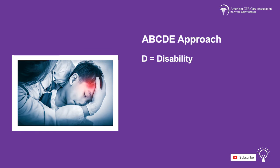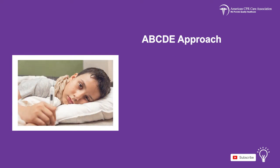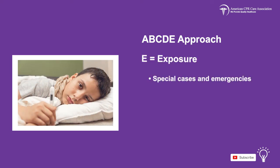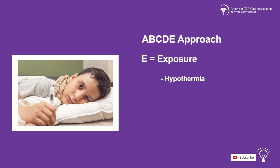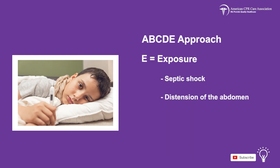D is for disability, which is usually noticeable during or right after the general assessment. When a child presents no response or is unconscious, immediate attention must be given. E is for exposure. For special cases and emergencies, immediately check for signs of exposure so the child may receive specific care immediately. Signs may include hypothermia, massive bleeding, petechia, purpura, septic shock, and distension of the abdomen.